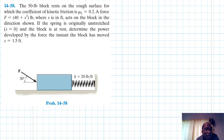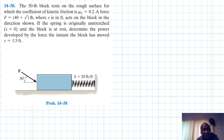Hello, I welcome you all. The problem reads that the 50-pound block rests on the rough surface for which the coefficient of kinetic friction is 0.2. A force F = 40 + s² (where s is in feet) acts on the block in the direction shown. If the spring is originally unstretched and the block is at rest, determine the power developed by the force the instant the block has moved s = 1.5 feet.